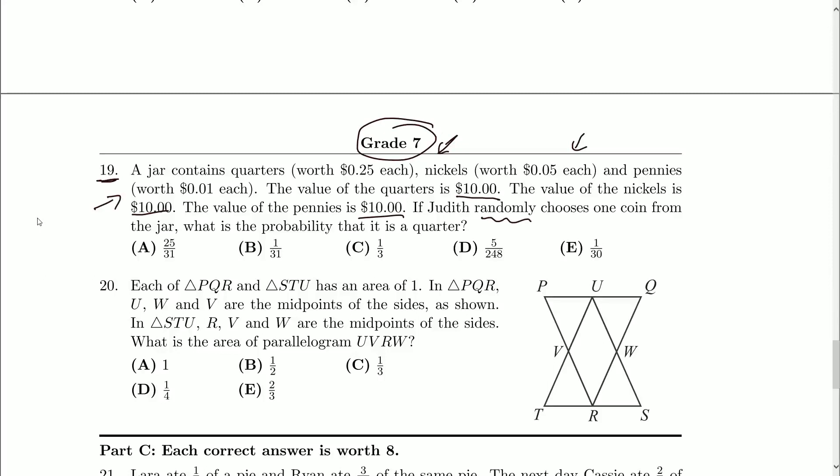Okay. So if I know the totals of the coins, the quarters are worth $10, I can quickly figure out how many quarters there are, how many nickels, how many pennies. Now, if Judith is randomly selecting, we need to use probability.